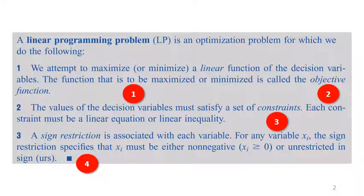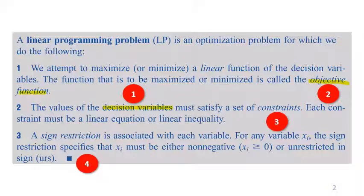To review a little bit, this is what a linear programming problem is. You see here that we have four characteristics that must exist. First, we must have the decision variables. Second, we must have the objective function. Third, we must have a set of constraints. And finally, we need to have sign restrictions.